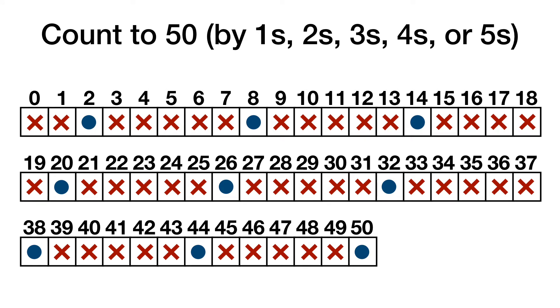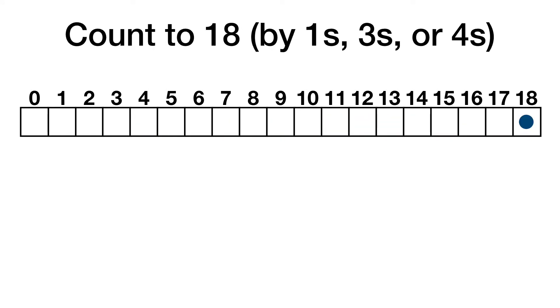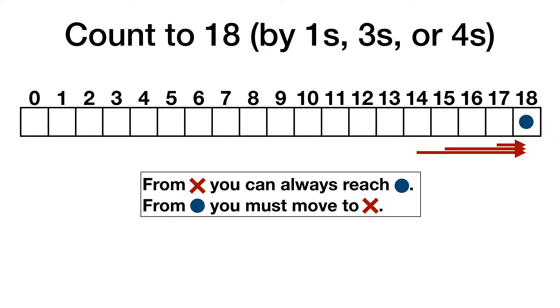There's no limit to the variations we could make. Let's try analyzing a harder version of the count to 18 game, where you count by 1s, 3s, or 4s. We'll also add the rule that you have to land on exactly 18. You can't skip over it. As before, we put a blue dot on 18.